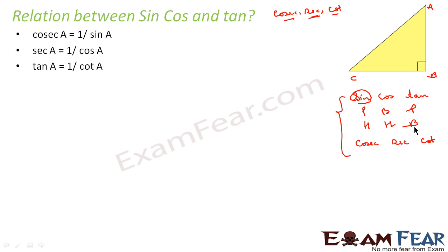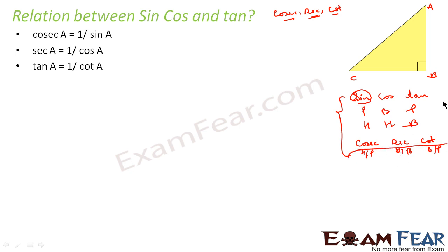We know sine is P by H, cos is B by H, and tan is P by B. Sine is 1 by cosec, cos is 1 by sec, and tan is 1 by cot. So the reciprocals are: if cos A is B by H, then sec A is H by B; if tan A is P by B, then cot A is B by P. You just remember the mnemonic 'Pandit Badri Prashad Hare Hare' and you can always find all six ratios for any right triangle.